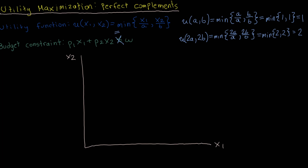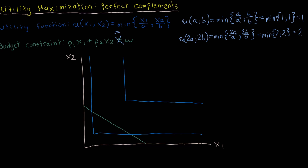With that in mind, let's find the graphical solution to this problem. The budget line is going to look something like that. I'm going to draw two arbitrary indifference curves. Starting with the one above and to the right: we can't have a solution on this indifference curve because it's not within our budget set. Our budget set is represented by the budget line and everything below and to the left, so nothing on this indifference curve is affordable. Therefore, a solution to the utility maximization problem can't be on this indifference curve.